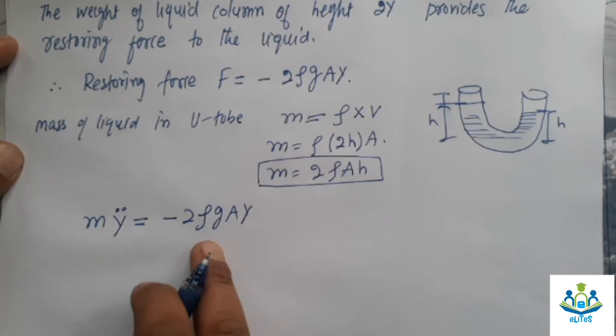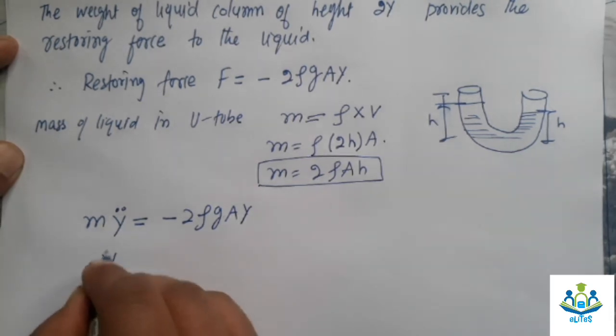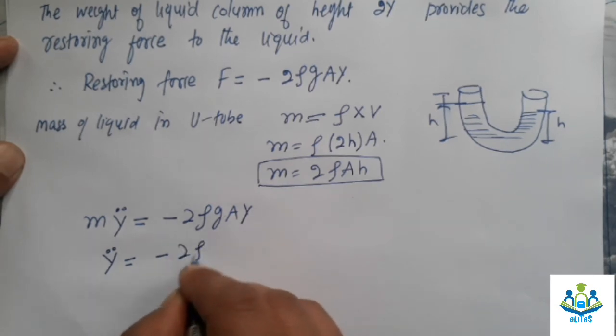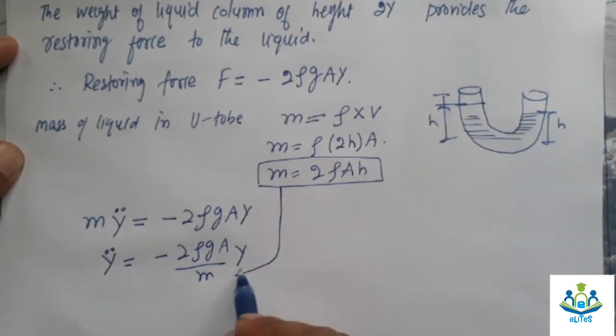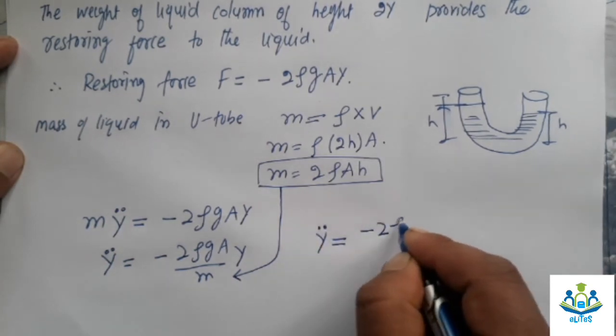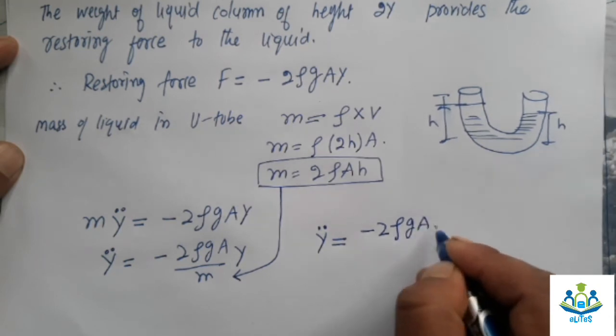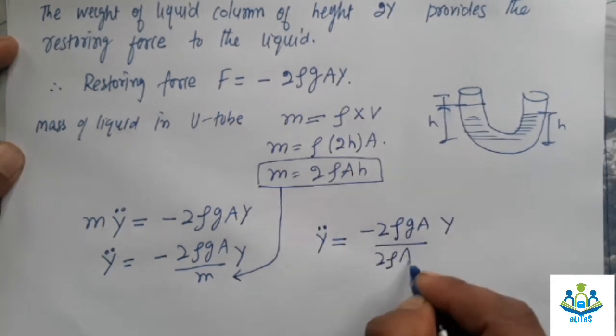So this force, which we are called restoring force, it will make it oscillate. The acceleration of this oscillation will be -2ρgA over M times Y. But M is here, you can place the value of M below this. So we get -2ρgAY over 2ρAH.